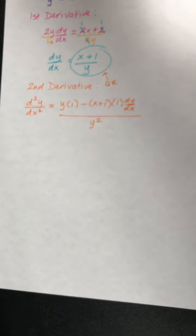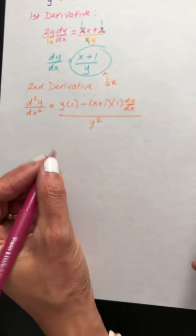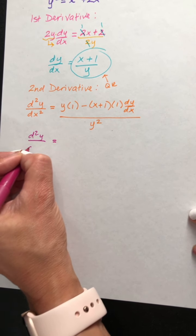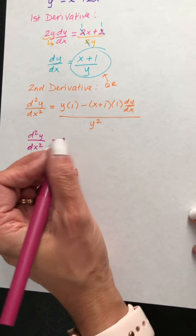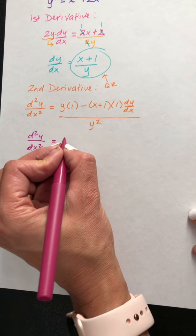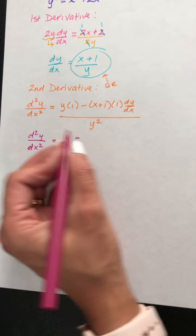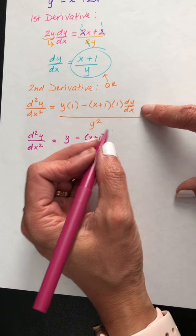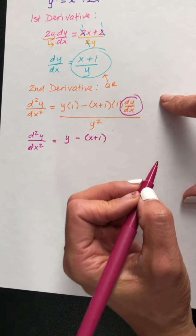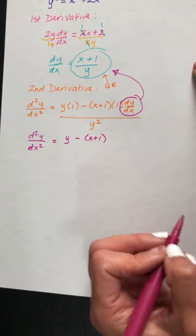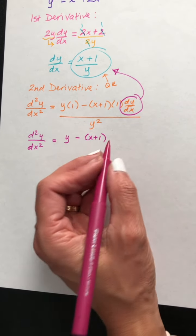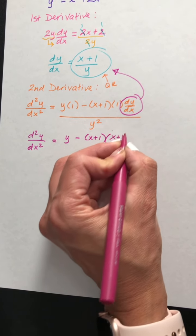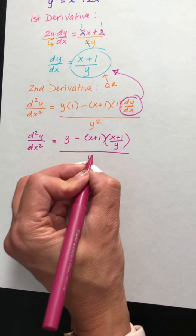Minus the high, times the derivative of the low — that would be 1, but it's a y, so dy dx — all over the low squared, y squared. Cleaning this up: d squared y over dx squared equals y minus (x plus 1) times 1, which is just x plus 1, times dy dx, over y squared. We know what dy dx equals — it's x plus 1 over y, the first derivative — so we plug that in.